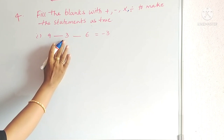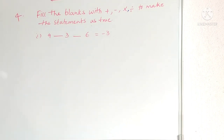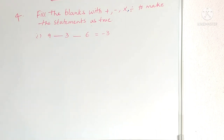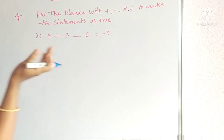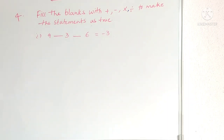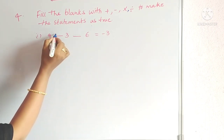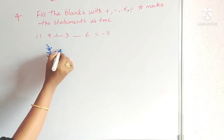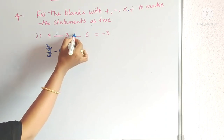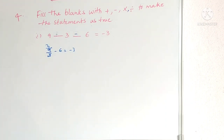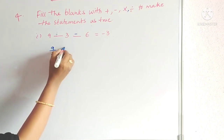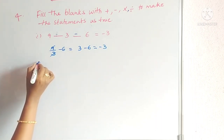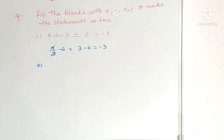First one: 9 __ 3 __ 6 = −3. If we put ÷: 9 ÷ 3 = 3, then 3 − 6 = −3. So the symbols are ÷ and −. Answer: 9 ÷ 3 − 6 = −3.